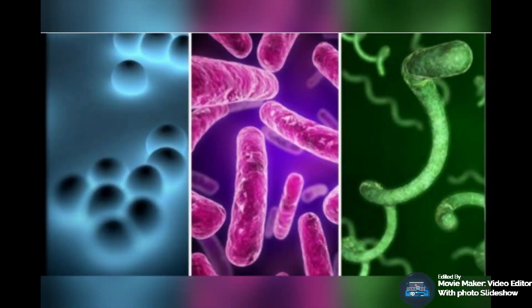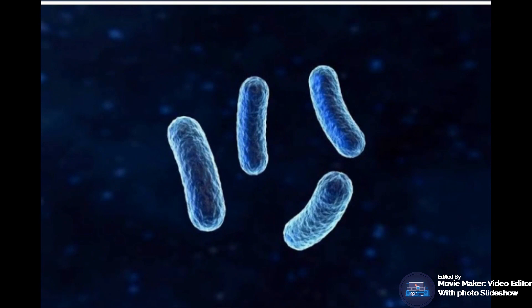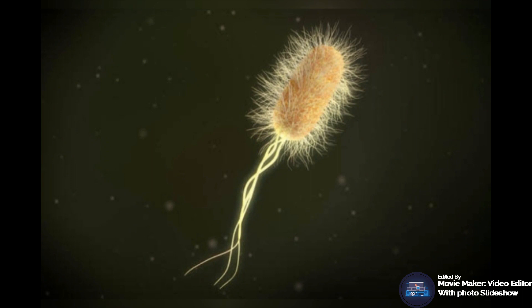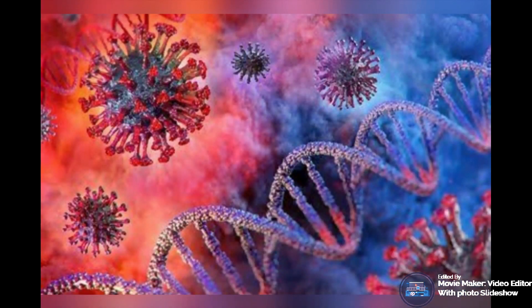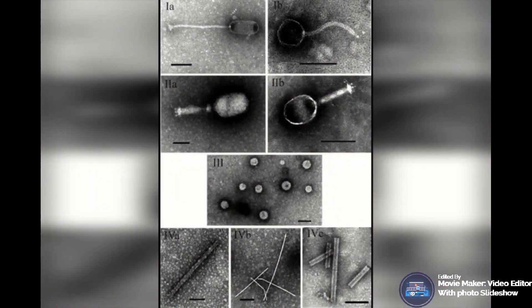Algae are present in most soils where moisture and sunlight are available. They are capable of photosynthesis, whereby they obtain carbon dioxide from the atmosphere and energy from sunlight to synthesize their own food. The major roles and functions of algae in soil include playing an important role in the maintenance of soil fertility, adding organic matter when they die, and increasing the amount of organic carbon in soil.